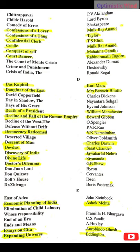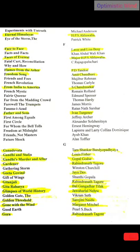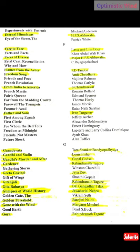The Ashok Mehta Committee's report led to the 73rd Amendment Act, which talks about the Panchayati Raj system. Essays on Gita — by Aurobindo Ghose. Expanding Universe — by Eddington. Eternal Himalayas — by H.P.S. Ahluwalia. Face to Face — by Lies and Lisberg. Faces of Avarice — by Major H.P.S. Ahluwalia. Flames from the Ashes — by P.D. Tandon. Freedom Song — by Amit Chaudhuri. From India to America — by S. Chandrasekhar. Fathers and Sons — by Ivan Turgenev.